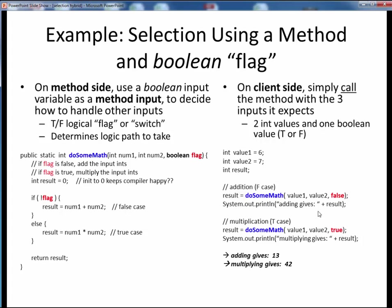So in this first call, this false input tells us we're going to use the if branch of the method and add the first two inputs, giving us 13. But in the second call, this true input tells us we're going to use the else branch of the method and multiply the first two inputs, giving us 42 instead. In either case, this third Boolean logic flag is controlling the path of execution that gets taken here inside the method's if-else.